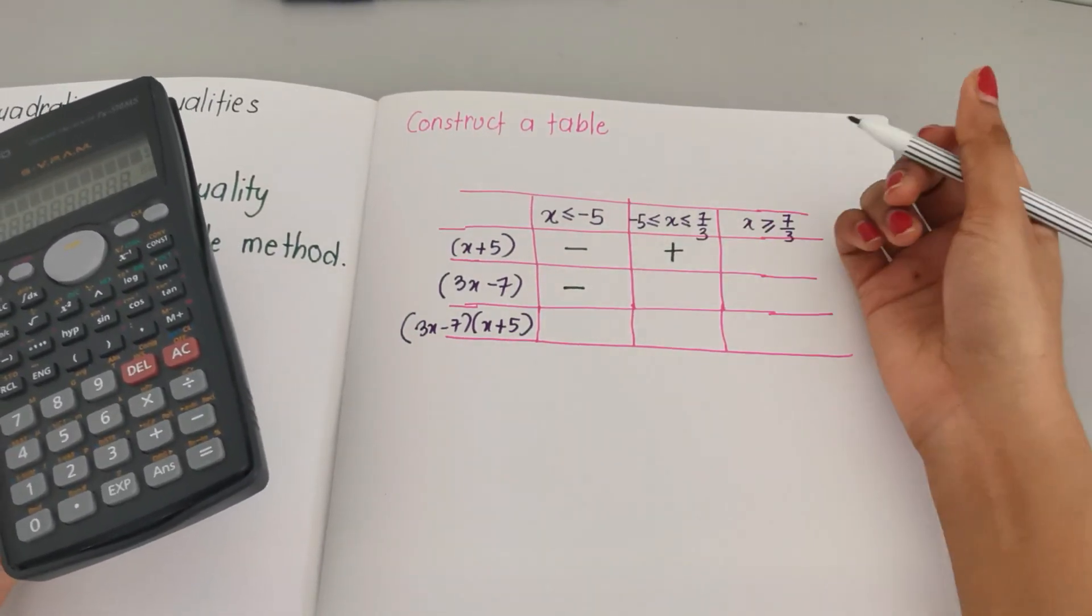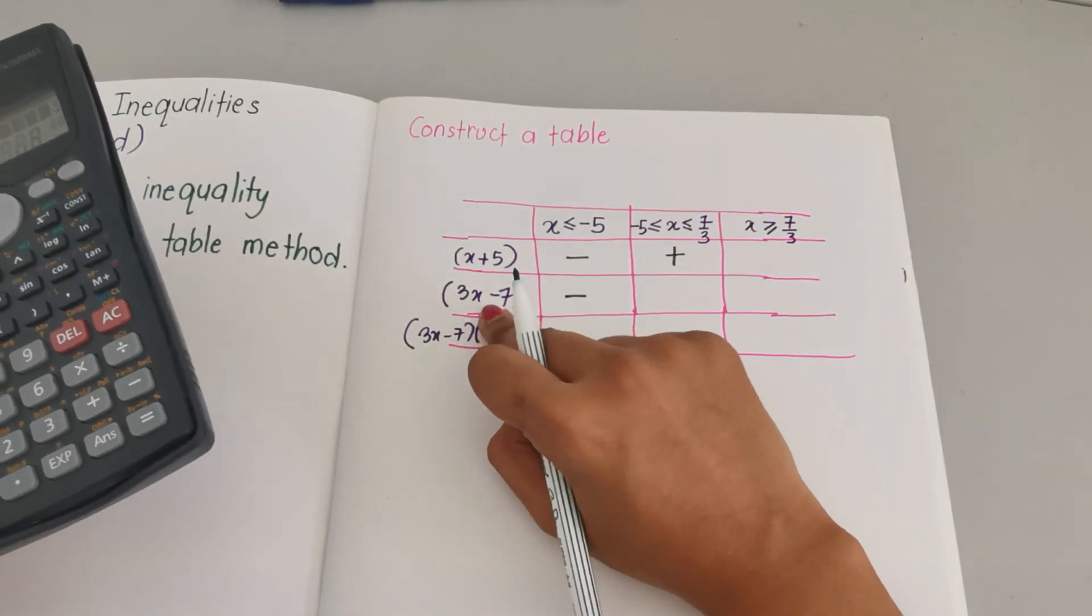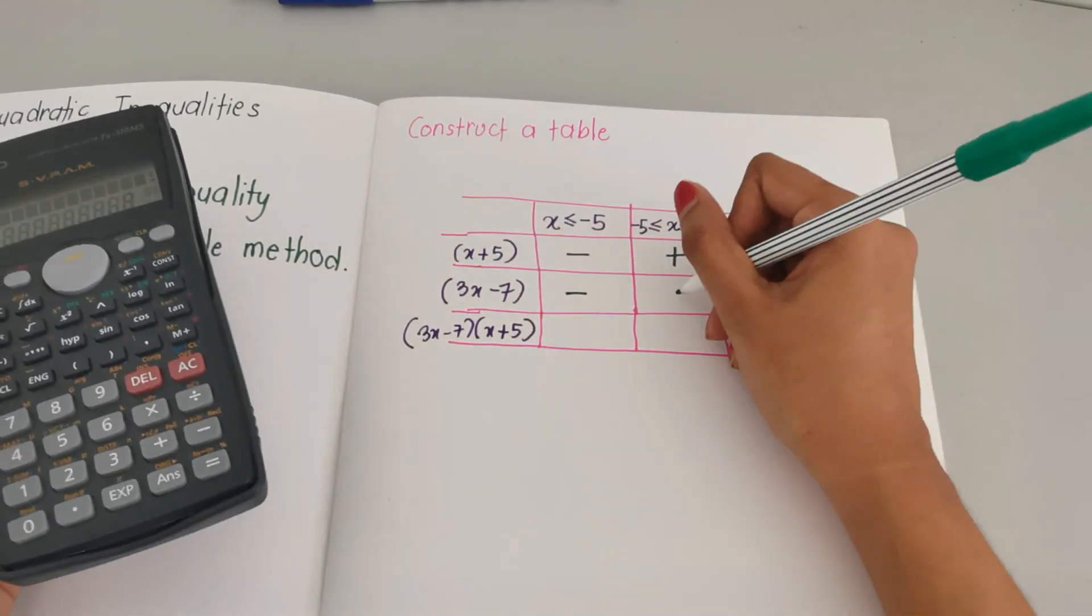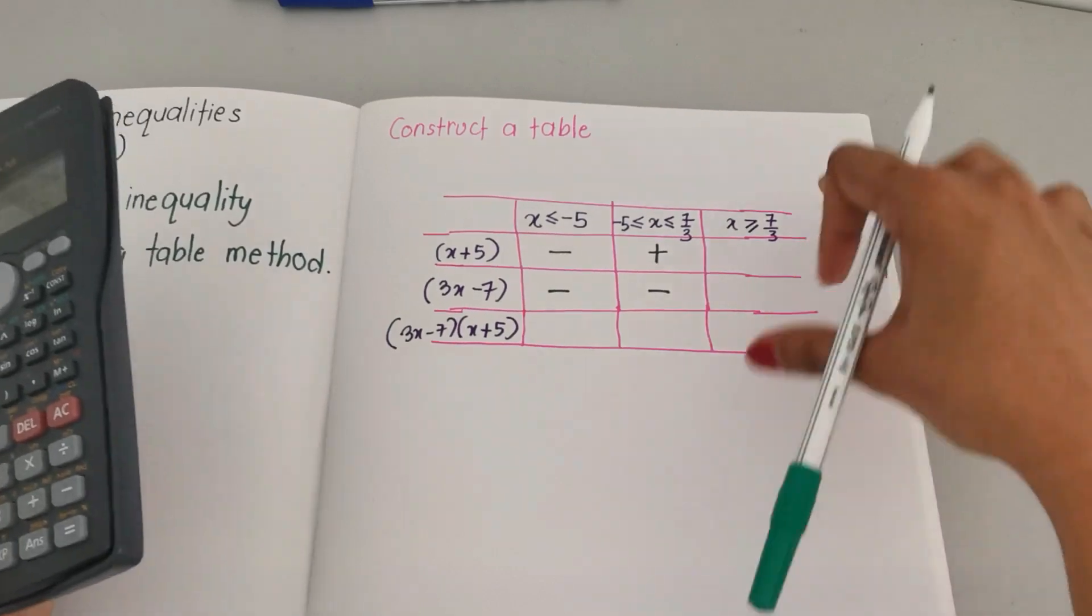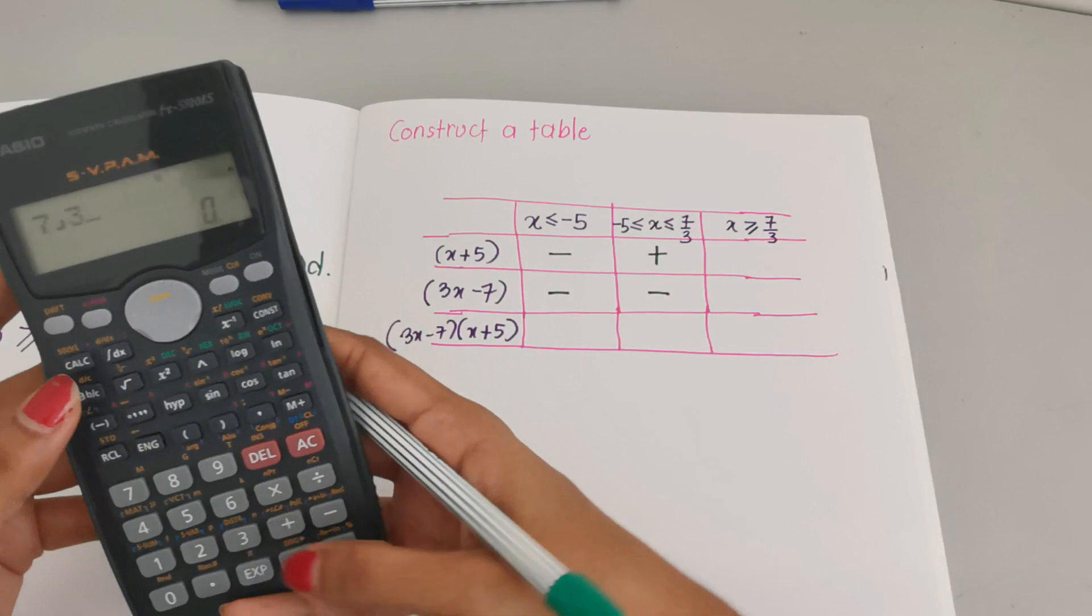Let's put zero inside here: 3 times 0, 0 minus 7 equals negative 7, so here we get a negative number.